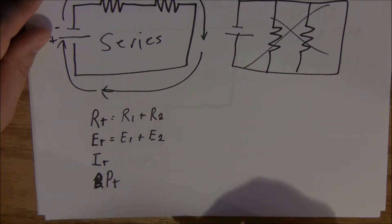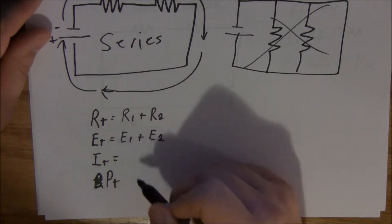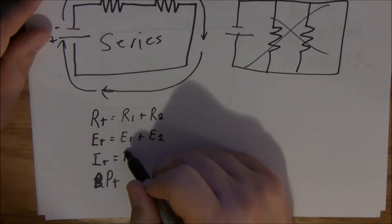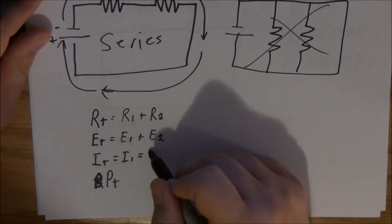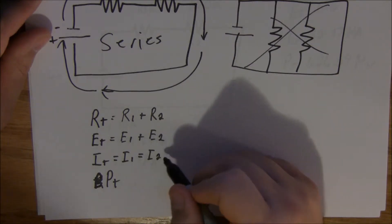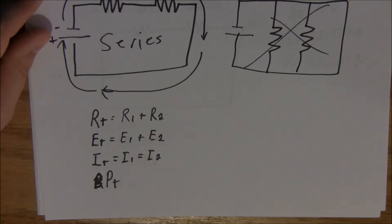Amperage is the one difference in the whole series of equations here. I total equals I1 equals I2, and so on. Your amperage is the same throughout the circuit. Your current always flows the same. At the beginning of the circuit, at the end of the circuit, it's going to be the same numbers — it's always the same.